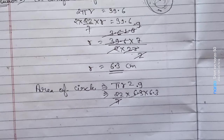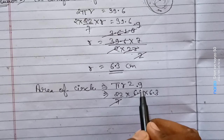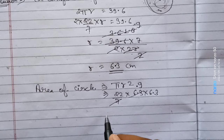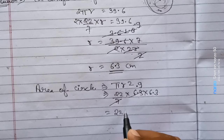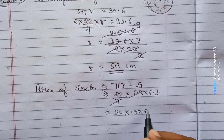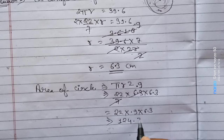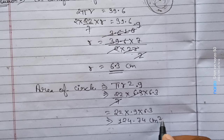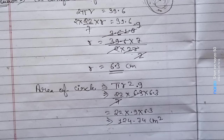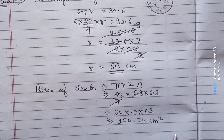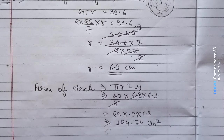We calculate 22 into 0.9 into 6.3, and the area of the circle comes out to 124.7 square centimeters.